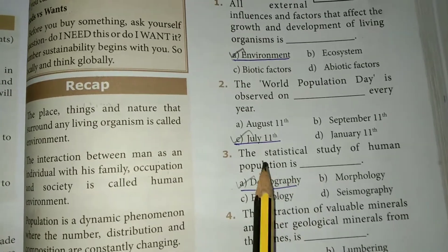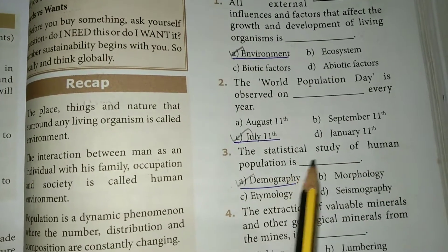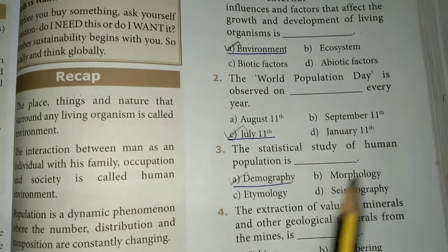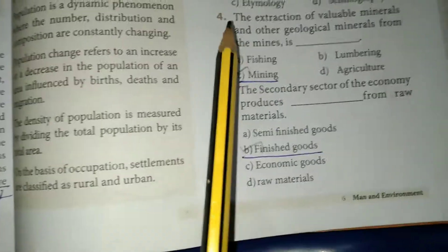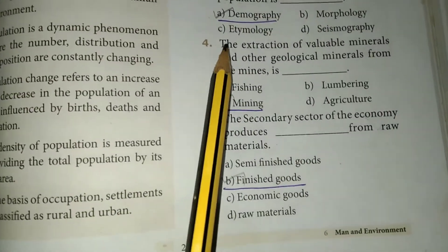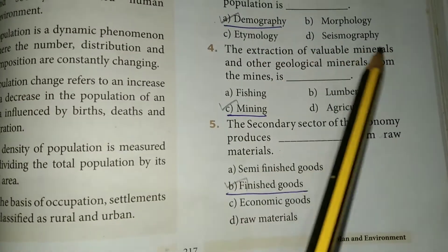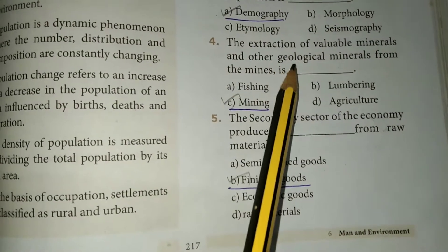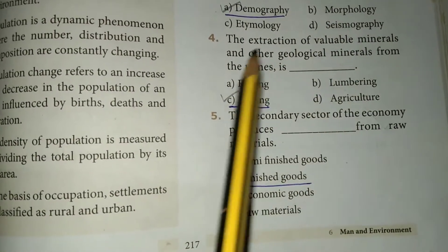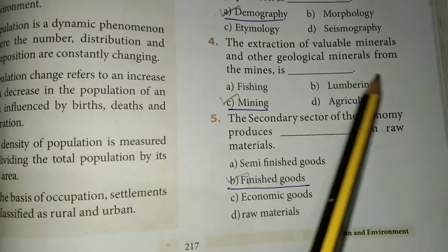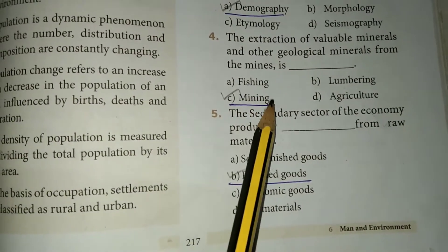Question 3: The statistical study of human population. The answer is option A: Demography. Question 4: The extraction of valuable minerals and other geological materials from the mines. The answer is option C: Mining.